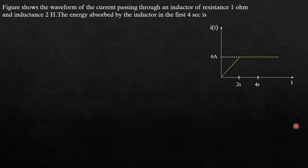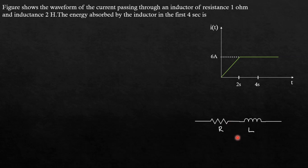Moving on to our next problem: here is a waveform of current passing through an inductor of resistance 1 Ohm and inductance 2 Henry. We need to find the energy absorbed by the inductor in the first 4 seconds. The practical model of an inductor is a coil, and every coil has some resistance, so this is not a pure inductor — it is an impure inductor with losses in the resistance.